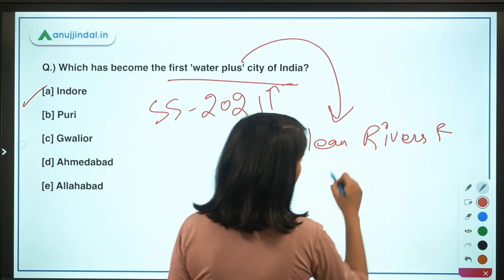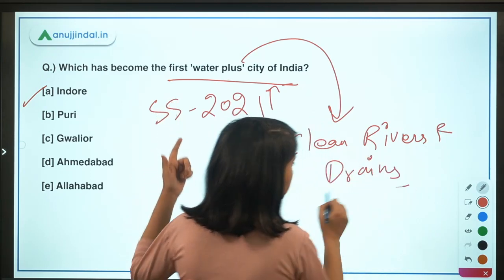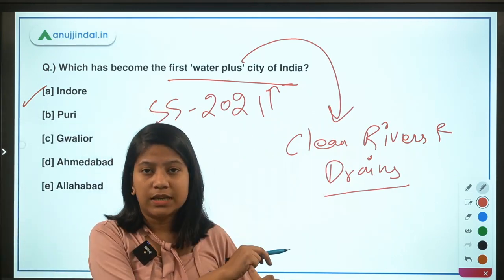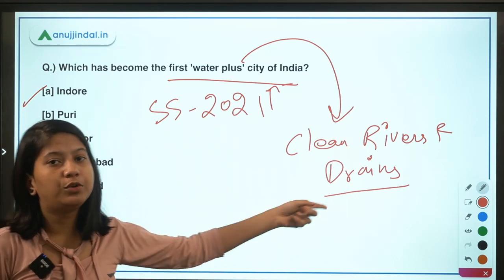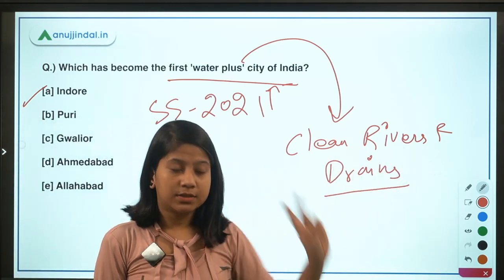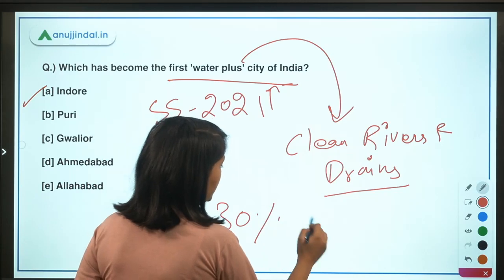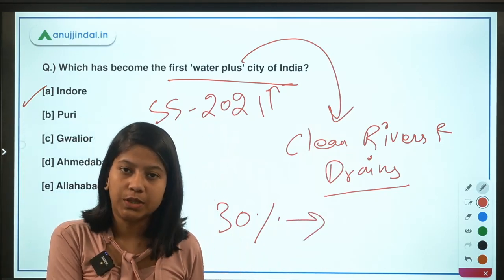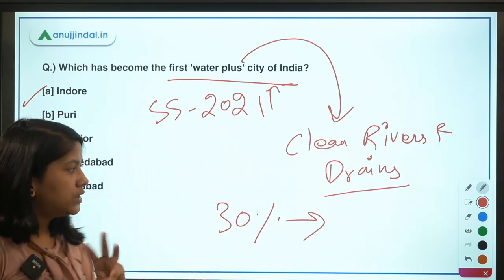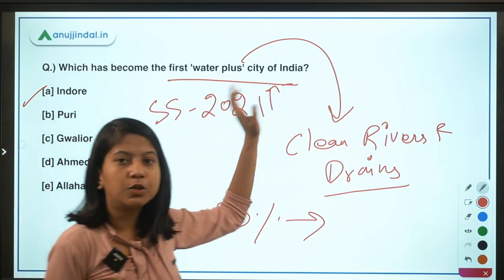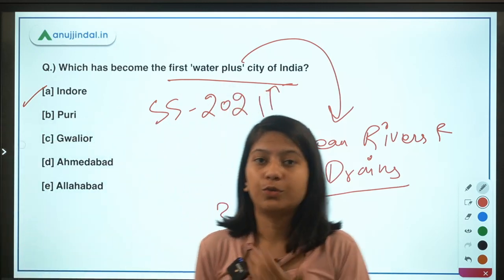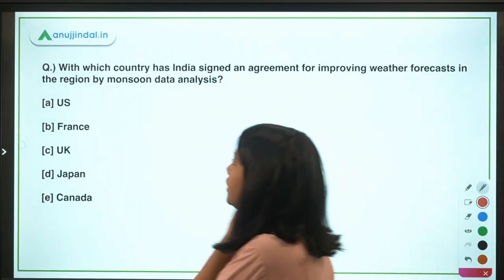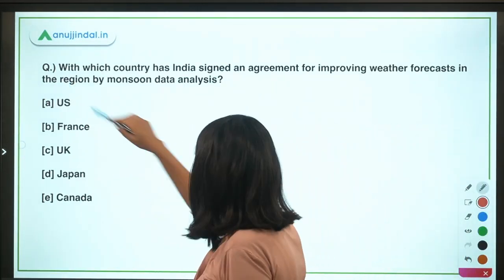The criteria for the Water Plus certification are: first, dirty water should not flow into rivers and drains; second, at least 30 percent of sewage water should be recycled in the city; and third, public toilets should be connected to the sewage system and must be clean. A city must fulfill all three criteria to obtain this certification.